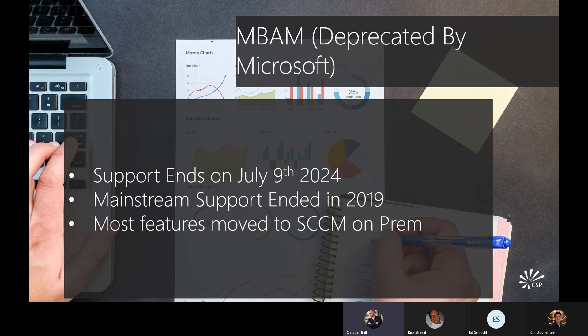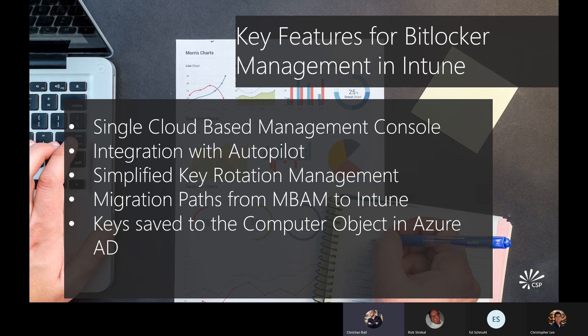BitLocker is Microsoft's main — really their only — encryption option, and that's what they recommend whether you use Intune or Configuration Manager. Intune and MEM is going to be our primary focus for the demo. Intune and Azure, in my opinion, is probably the best way to manage your keys. You can store your keys to a device in Azure AD whether you have Azure AD-only joined devices or hybrid Azure AD-joined. You can integrate your encryption policies with Autopilot, which we'll cover specifically next month in our upcoming CSP webinar.